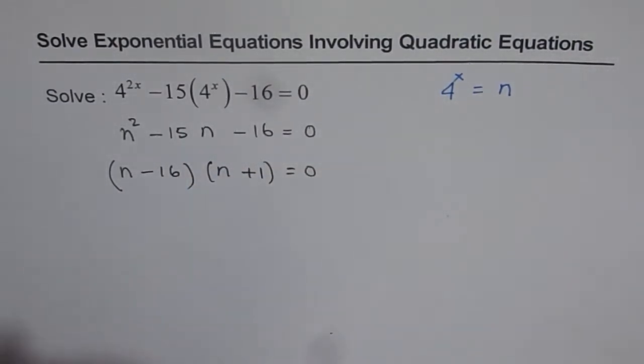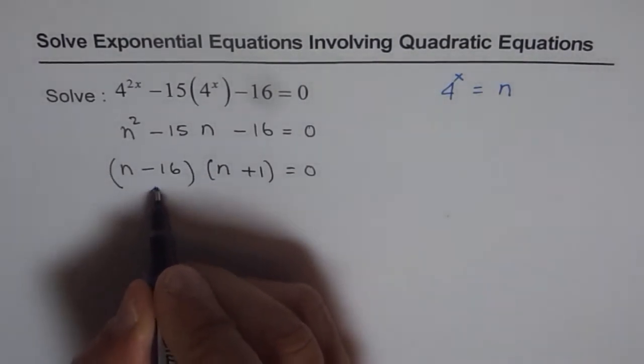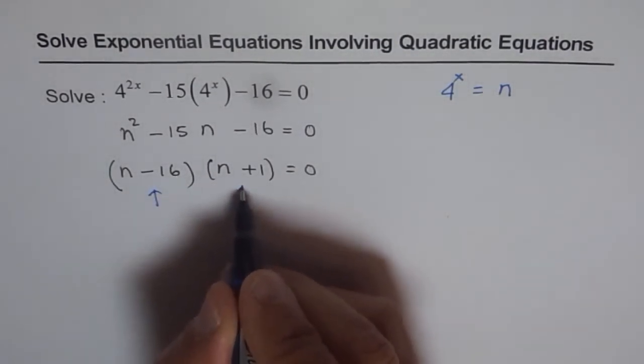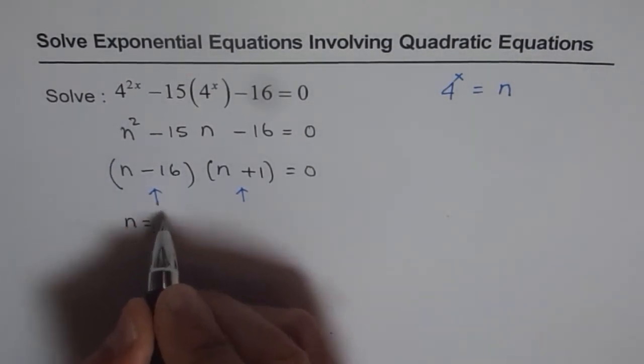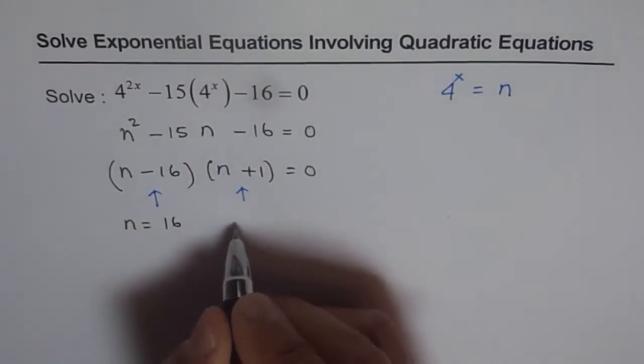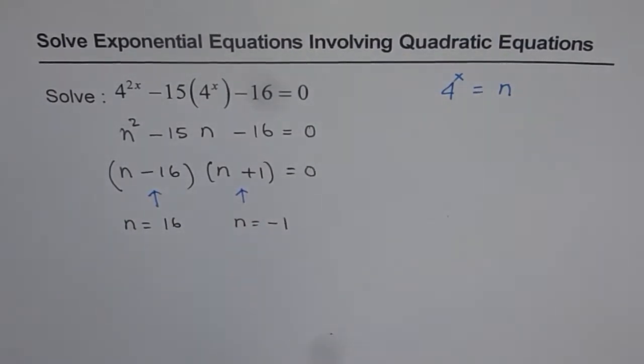Now that gives us two solutions. One from equating the first factor to zero, the other from the second. So we get n = 16 as one solution and n = -1 as the other solution.